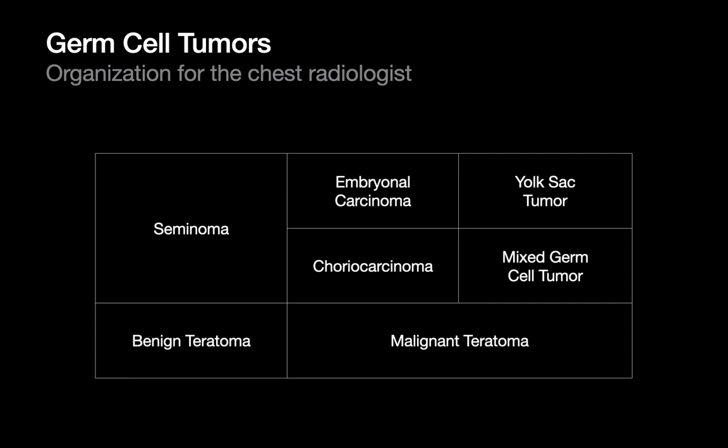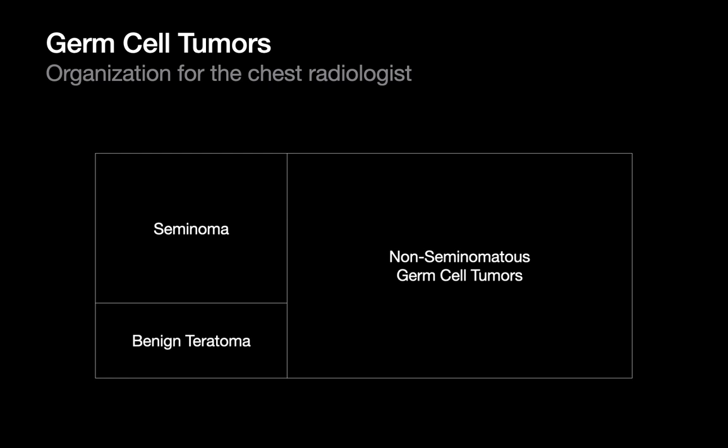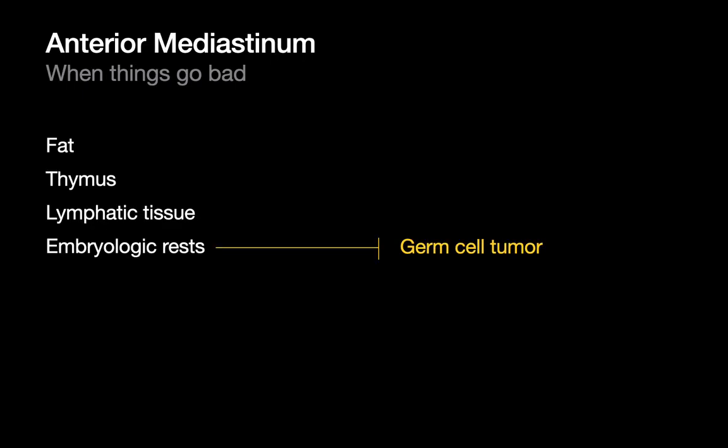As a chest radiologist, we can usually get away with categorizing all of the different types of germ cell tumors into just three buckets: seminomas, benign teratomas, and non-seminomatous germ cell tumors. So embryologic rests could give rise to anterior mediastinal masses caused by benign teratomas, seminomas, and non-seminomatous germ cell tumors.